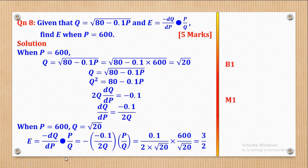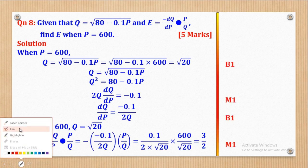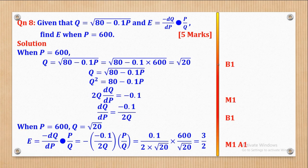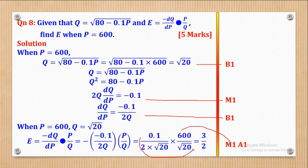Now let's see how the marking is done. The bonus mark is for getting the corresponding value of q when p = 600, which is √20. The next mark is for differentiating correctly. Simplifying gives the third mark. M1 is for substituting everything into the expression for E. And A1 is for simplifying to get the value 3/2. That's how the 5 marks come about in such a question.